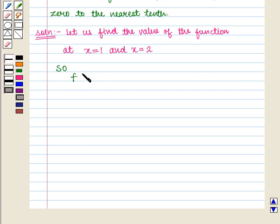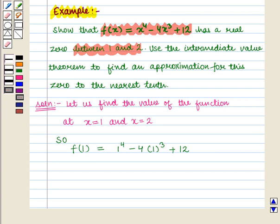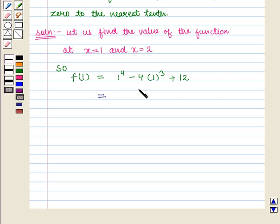So f(1) will be equal to 1^4 - 4(1)^3 + 12. That is, we have put the value of x as 1 in this function. Now this is equal to 1 - 4(1) + 12.